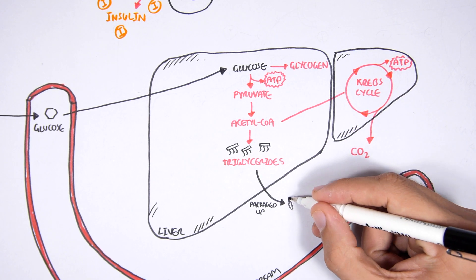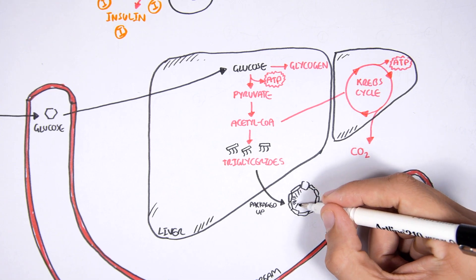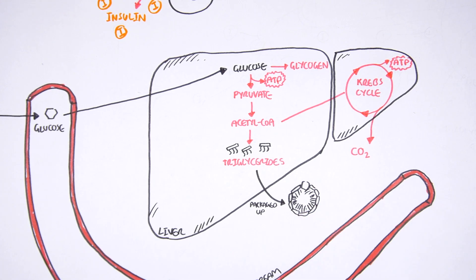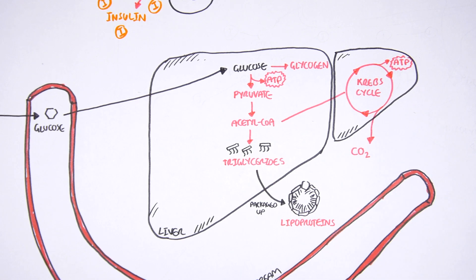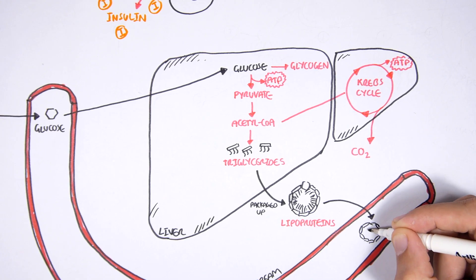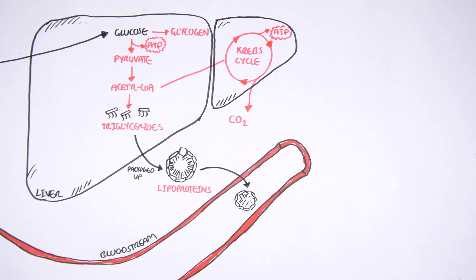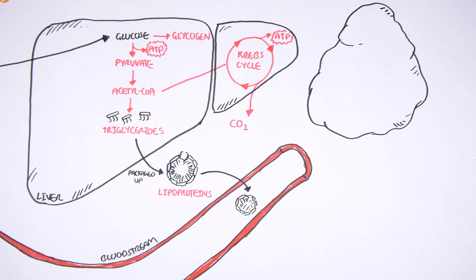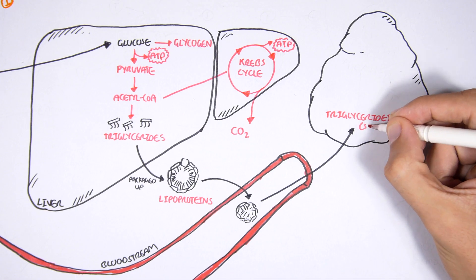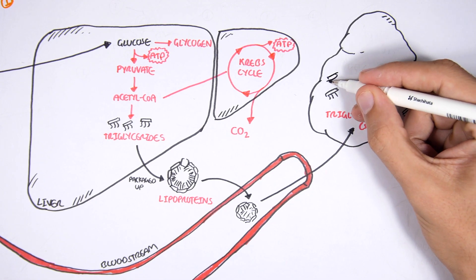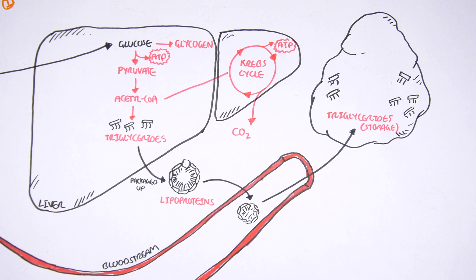Triglycerides are packaged up by the liver during the fed state into what are called lipoproteins — essentially lipids, which are triglycerides combined with proteins. These lipoproteins travel in the blood to adipose tissues, where the triglycerides are stored.